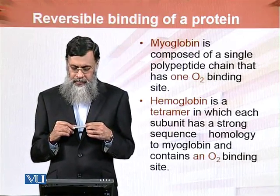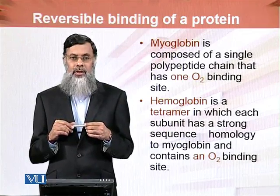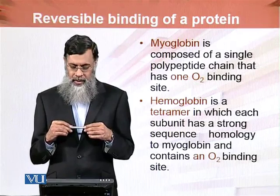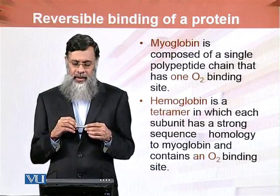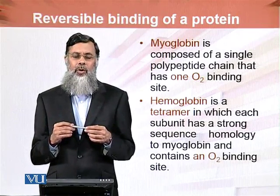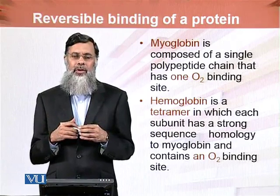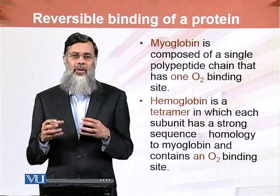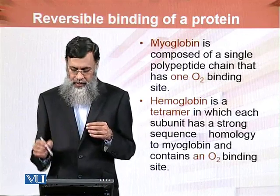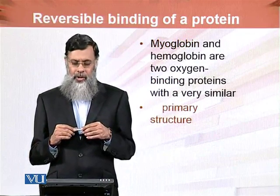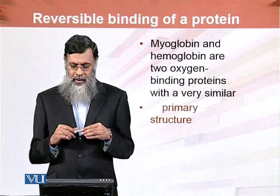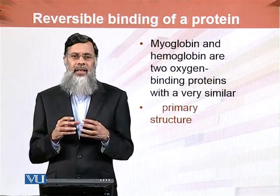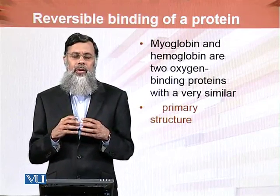Hemoglobin is a tetramer in which each subunit has strong sequence homology to myoglobin and contains only one oxygen binding site. Myoglobin is a monomer with a single polypeptide chain, while hemoglobin is a tetramer with four monomeric subunits — two alpha and two beta subunits. Each subunit similarly has only one oxygen binding site.